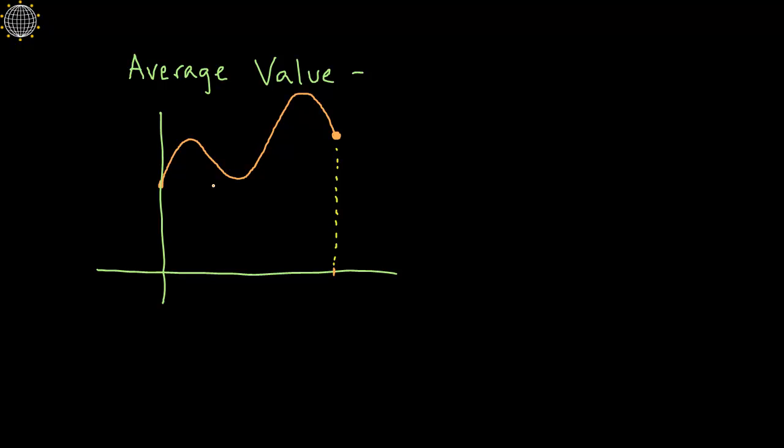So for instance, if your function starts here and then goes up and then down and then up and then down, you want to know what the average value is that it attains. Actually, our eyes are pretty good at seeing this. Normally we can just kind of ballpark it. The average value looks like it's maybe somewhere right about here.